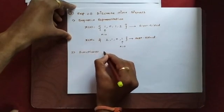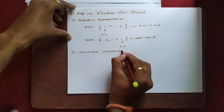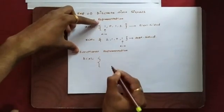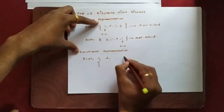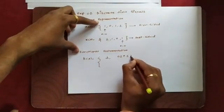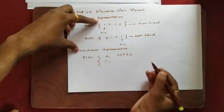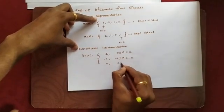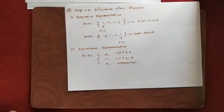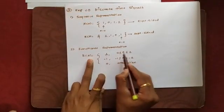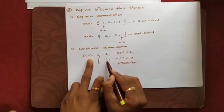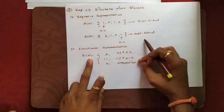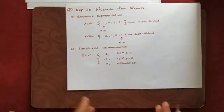In many examples a sequence or a function is given. The second form is functional representation. Consider a function f(n) equal to 1 for n such that 0 < n ≤ 2, equal to −1 for n between −1 and −2, and 0 otherwise. This function has amplitude 1 between n=0 and n=2, amplitude −1 between n=−1 and n=−2, and is zero apart from these two ranges. This is a functional representation of a signal.